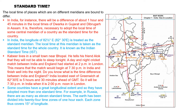So when it is 2 pm noon in London, it will be 7:30 pm in India. Some countries have a great longitudinal extent and have adopted more than one standard time. Russia, for example, has as many as 11 standard times. The earth has been divided into 24 time zones of one hour each, and each zone covers 15 degrees of longitude.